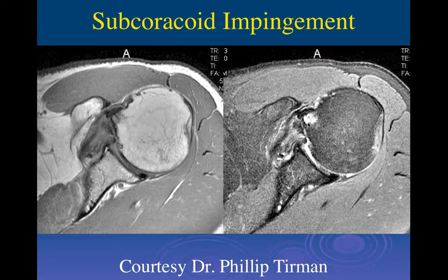The deltoid and the supraspinatus are very strong muscles; the others are usually weaker because they're not functioning most of the time.